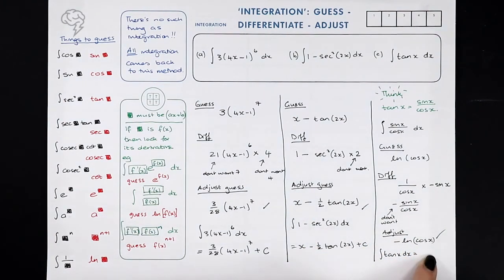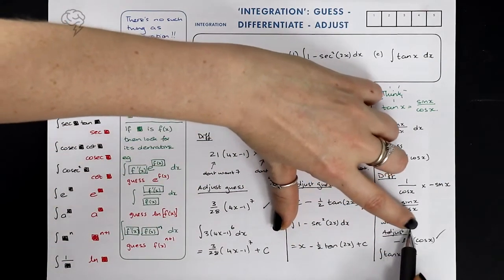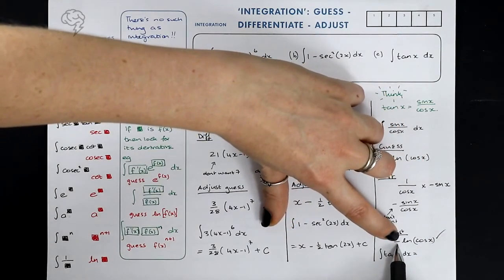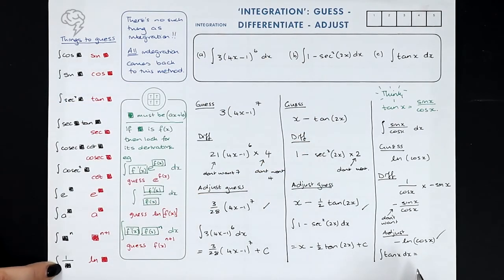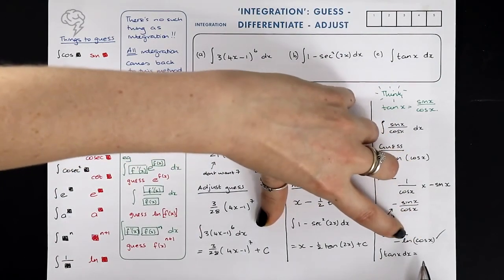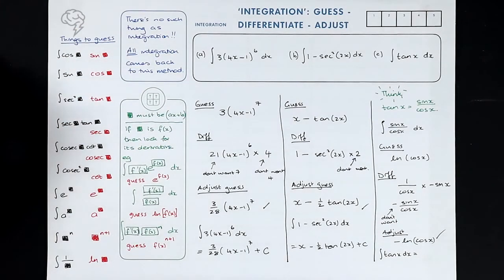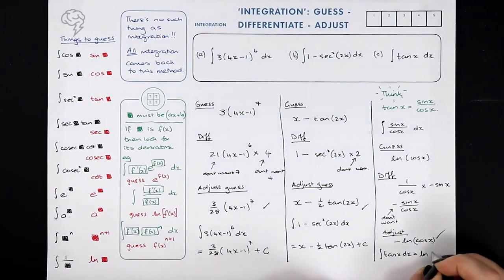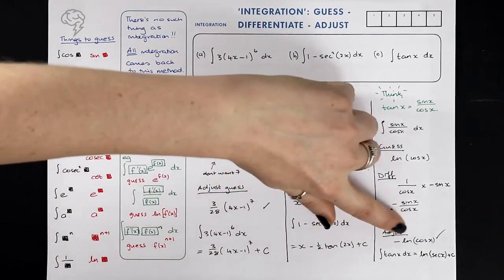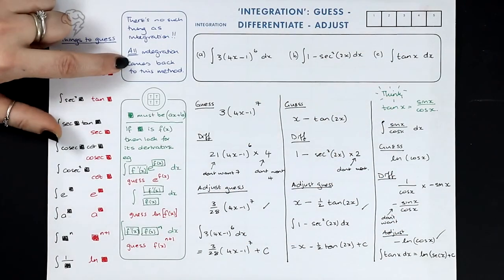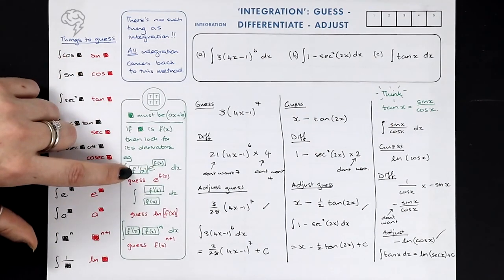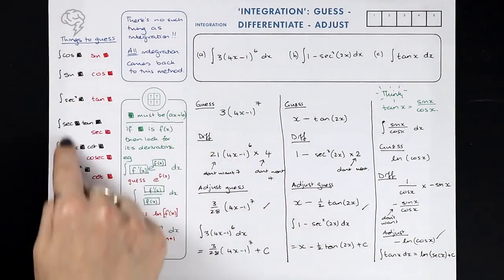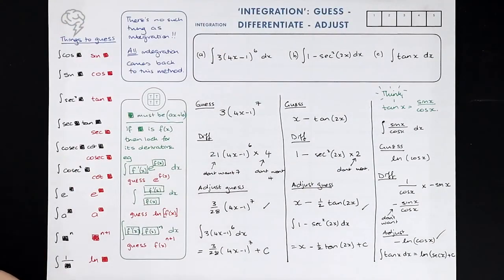So I make a tiny adjustment: put a minus at the beginning of my guess, so I guess −ln(cos x). Now when I differentiate, the ln gives 1 over, then I multiply by the derivative of the inside, which is −sin x, but that minus cancels with the minus I put in — which is why I put it there. So the integral of tan x is −ln|cos x| + c. There's another way you'll see this written: using log rules, I can move that minus to become a power, so −ln(cos x) = ln(cos x)^{−1} = ln(1/cos x) = ln(sec x). So you'll also see this written as ln|sec x| + c — both are correct. All integration comes back to this method, and if it isn't one of the 10, a little rearrangement or spotting the derivative will bring it back to the guess-differentiate-adjust approach.